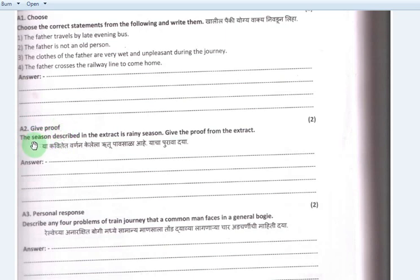Activity number 2, A2 Give proof. The season described in the extract is rainy season. Give the proof from the extract. The proof is: his shirt and pants are soggy and his black raincoat stained with mud. The humid monsoon night and his chappals sticky with mud. All these lines show that the season described in the extract is rainy.